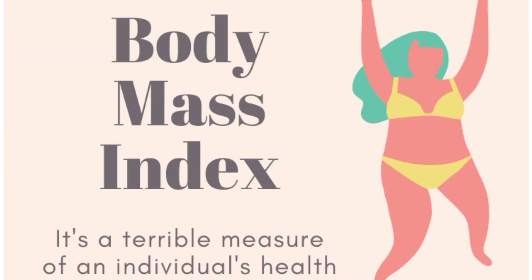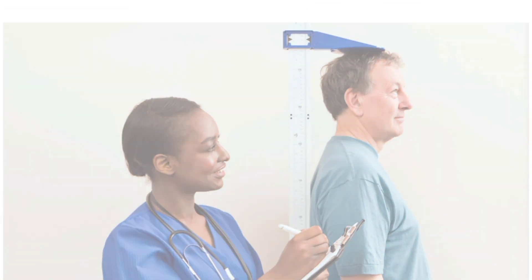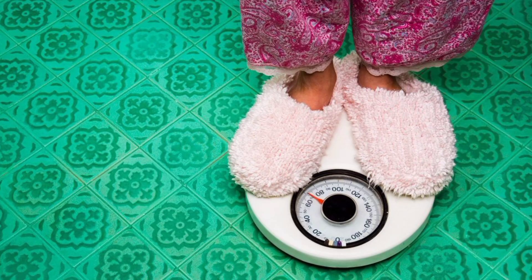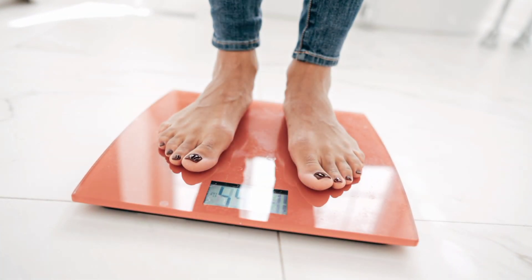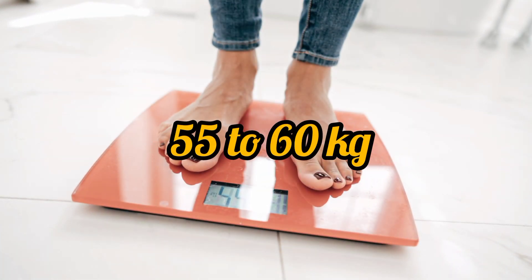What is BMI? BMI is the full form of Body Mass Index. The concept of BMI is that your ideal weight depends on your height. For example, if your height is 167 centimeters, your ideal weight is 58 to 60 kilograms — that is the correct, ideal weight.